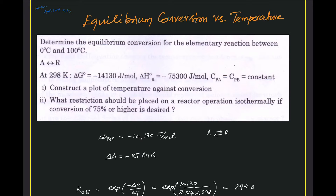This problem is about finding the equilibrium conversion versus temperature. Determine the equilibrium conversion for the elementary reaction A giving rise to R and R giving rise to A, between 0 and 100 degrees Celsius. We are given the delta G value and delta Hr (heat of reaction) at 298 Kelvin, and the specific heat of feed and product are the same. We need to find the plot of XAE versus temperature and the temperature corresponding to a minimum conversion of 75%.